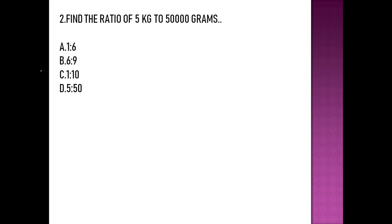The second question asks: find the ratio of 5 kg to 50,000 grams. A ratio can also be written in fractional form. We have 5 kg, and first we need to convert 50,000 grams into kilograms. To convert grams into kilograms, we divide the given grams by 1000.